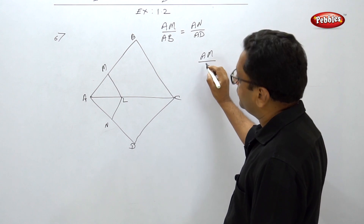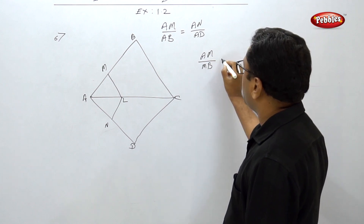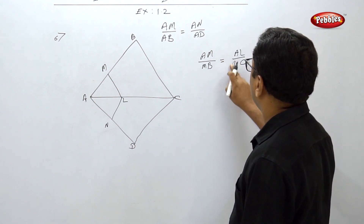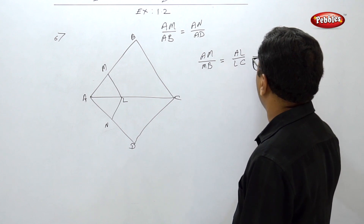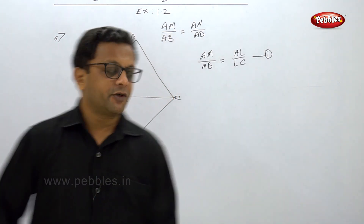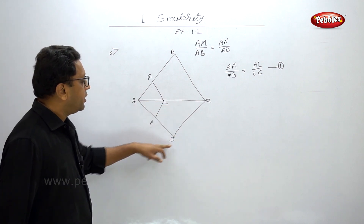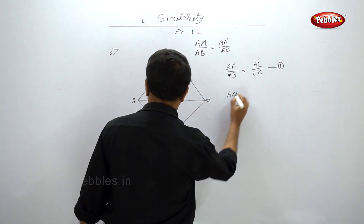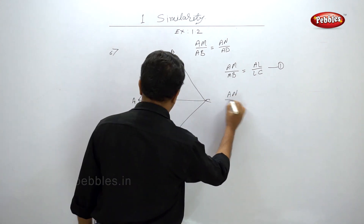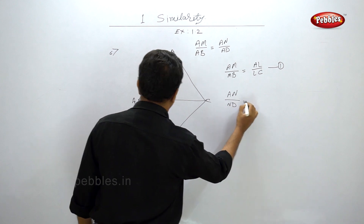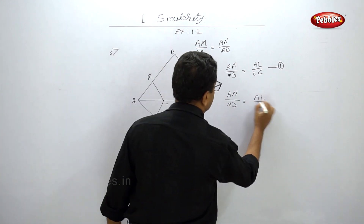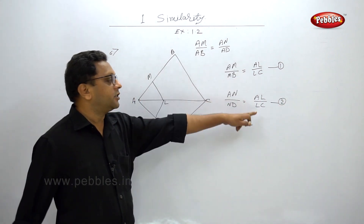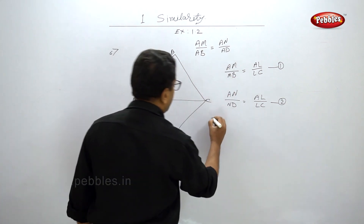By BPT on that triangle, AM/MB equals AL/LC — this is the first equation. Now consider the second triangle where NL is parallel to DC. By BPT, AN/ND equals AL/LC — this is the second equation. Since AL/LC is common, we get AM/MB equals AN/ND.